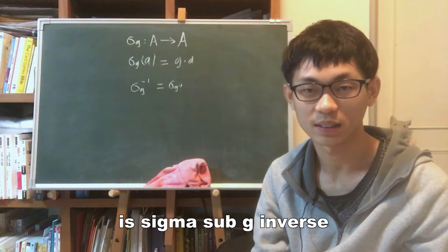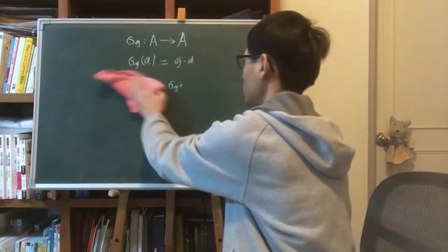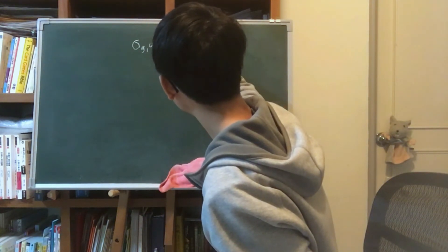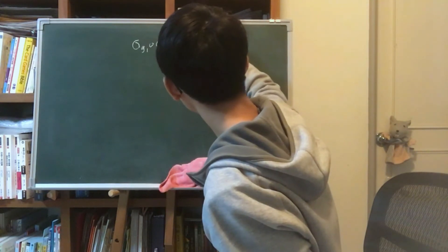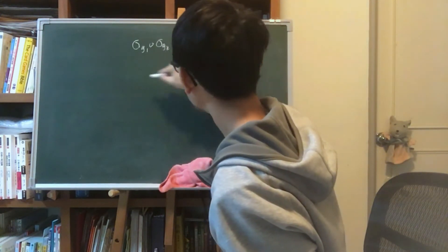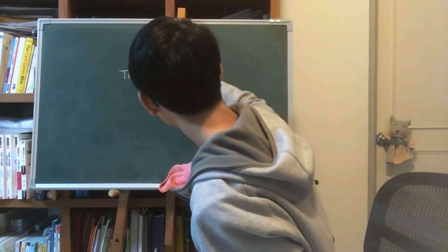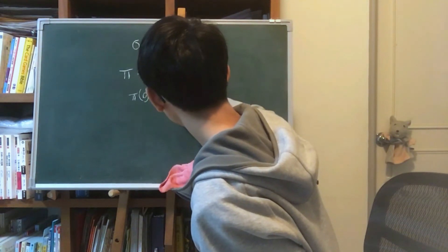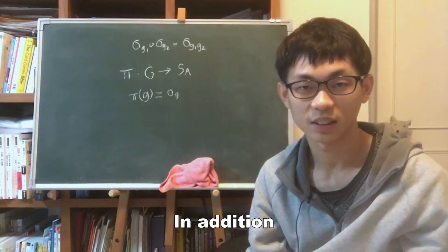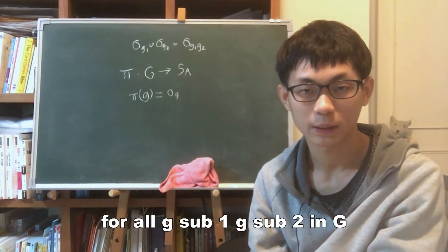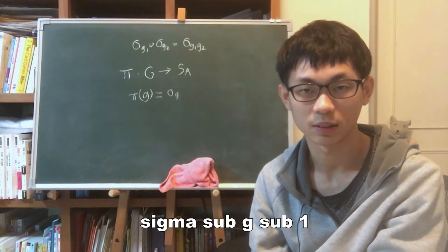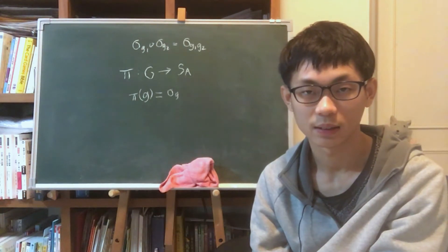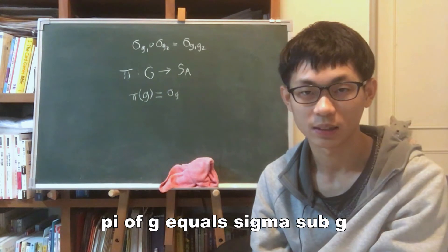The inverse of σ_g is σ_{g⁻¹}. In addition, for all g₁, g₂ in G, σ_{g₂} composed with σ_{g₁} equals σ_{g₁g₂}. So the map π from G to S_A defined by π(g) = σ_g is a homomorphism.